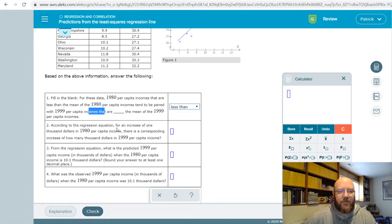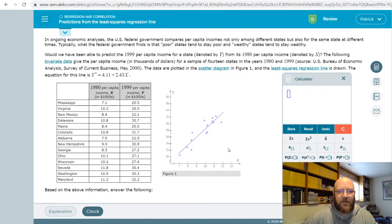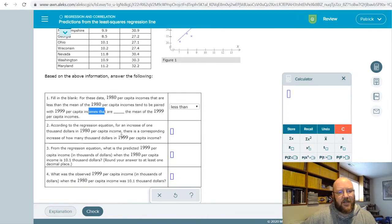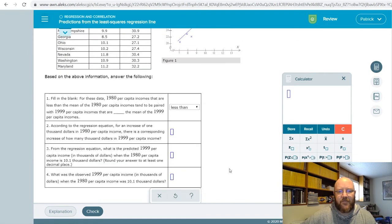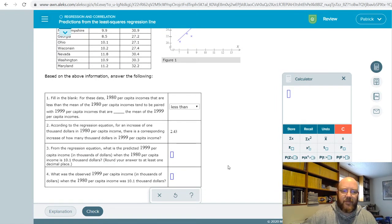So this next question, according to the regression equation for an increase of $1,000 in 1980 per capita income, there's a corresponding increase in 1999 per capita income. Well, to answer this one, all it's asking for you is the slope right here. So because as our x value goes up by 1, our y value will go up by 1 times whatever this is. And so now it's asking for the corresponding increase, which all you're going to do is just directly punch in the slope there.